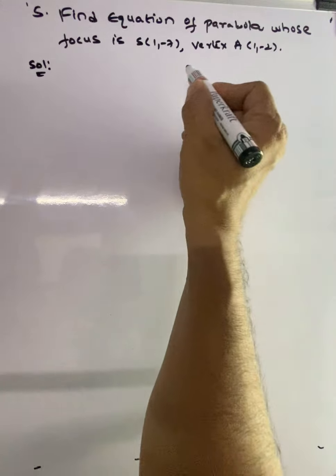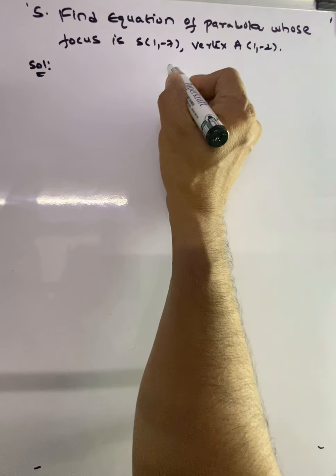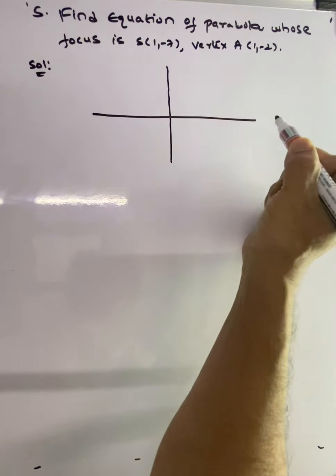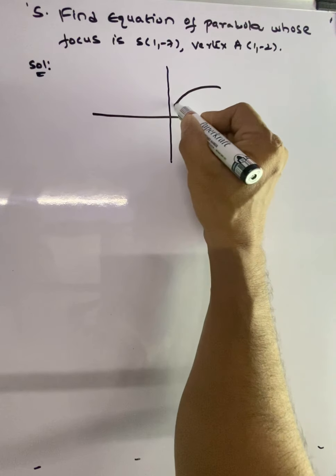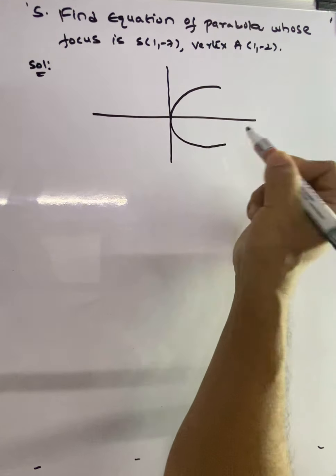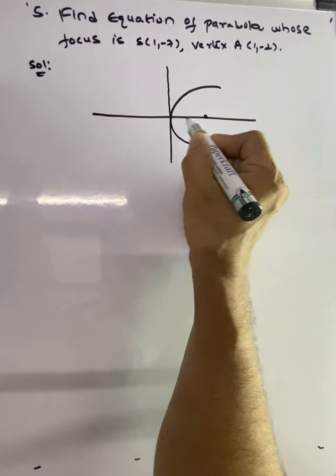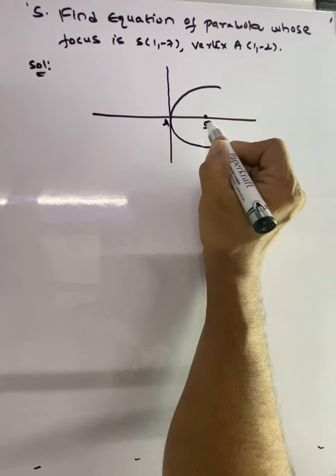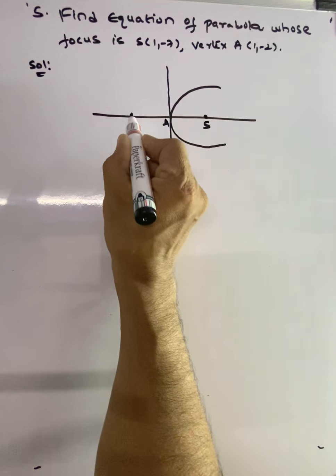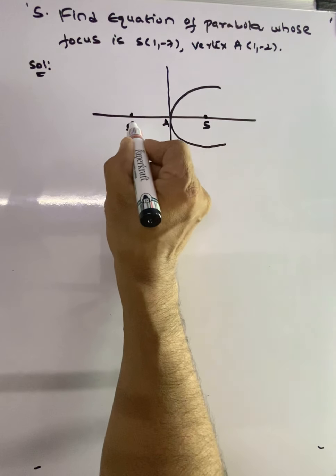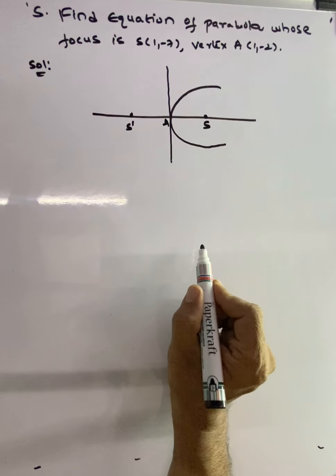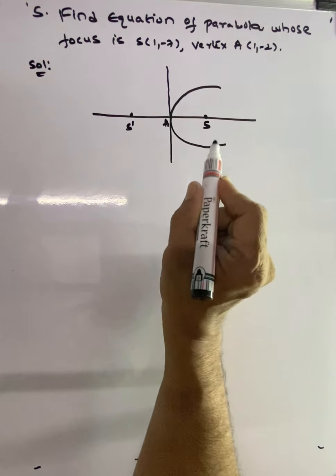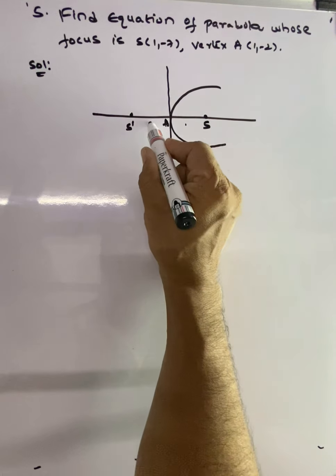When focus and vertex are given, we assume a parabola with vertex A and focus S. We must first find S'. As we know, the distance from A to S and A to S' is the same — A is the midpoint between S and S'.